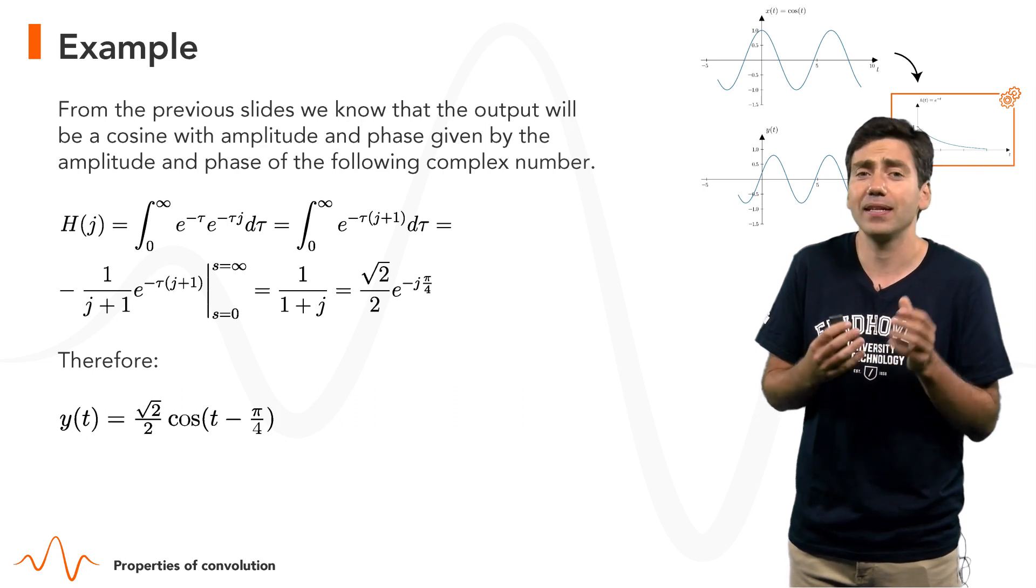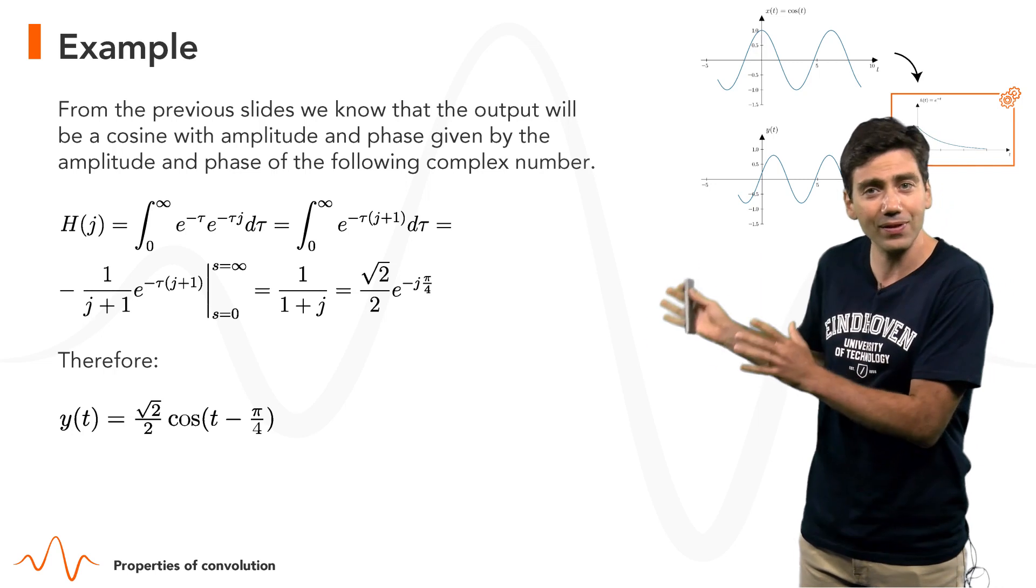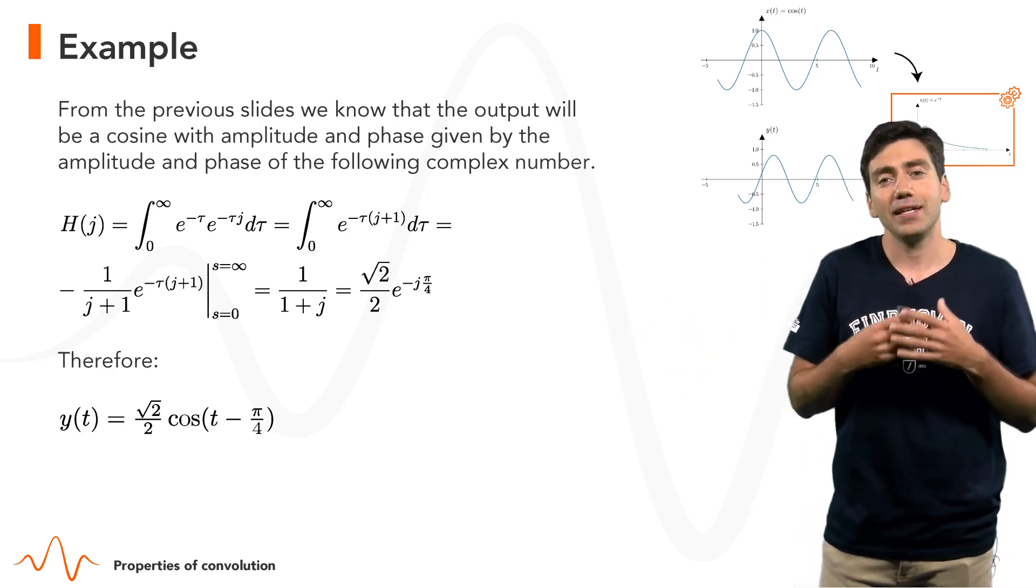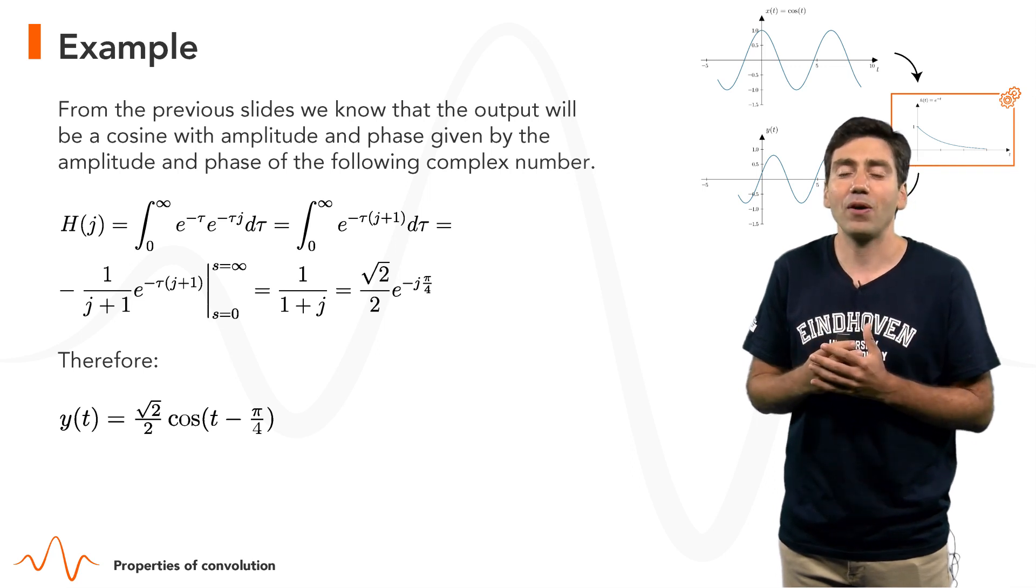Now, if we compute this integral, the steps of derivation are given here, we get this complex number √2/2 e^(-jπ/4).